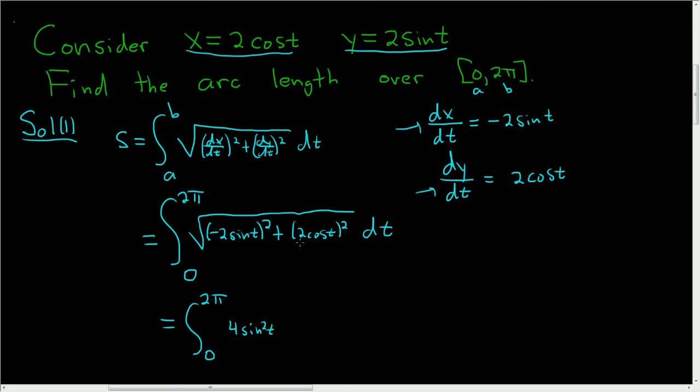Likewise here, we're going to get 4 cos² t, so 4 cos² t. And we still have the giant square root.